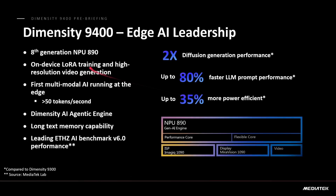On AI, the latest generation NPU focuses most importantly on running large language models locally on the device. MediaTek are claiming 80% faster LLM prompt performance with 35% more power efficiency, and two times diffusion-based image generation performance — all compared to the Dimensity 9300 numbers as given by MediaTek.